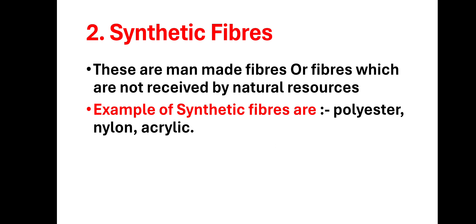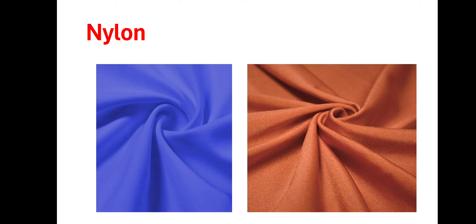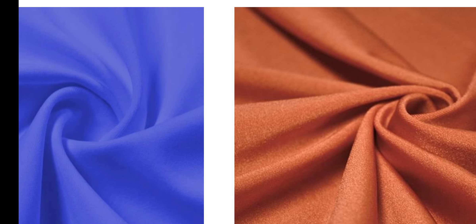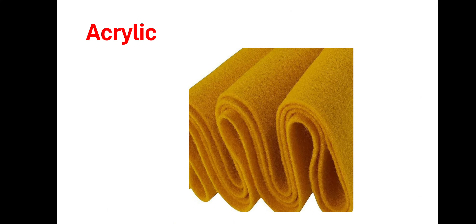Now synthetic fibers — these are man-made fibers, ये natural resources से नहीं लिए गए। इसलिए इनको synthetic fibers बोला गया है। Examples हैं polyester, nylon, acrylic — इनकी pictures देखो। So I hope सब बच्चों को यह chapter बहुत अच्छे से समझ आया होगा। Thank you.